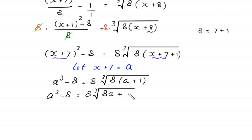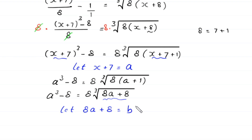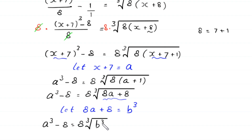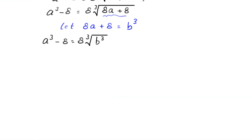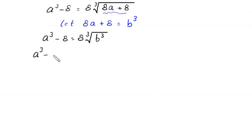Now suppose that 8a+8 equals b³. With this substitution the equation becomes a³ minus 8 equals 8 times the cube root of b³, which simplifies to 8b. We call this equation 1: a³ minus 8 equals 8b.